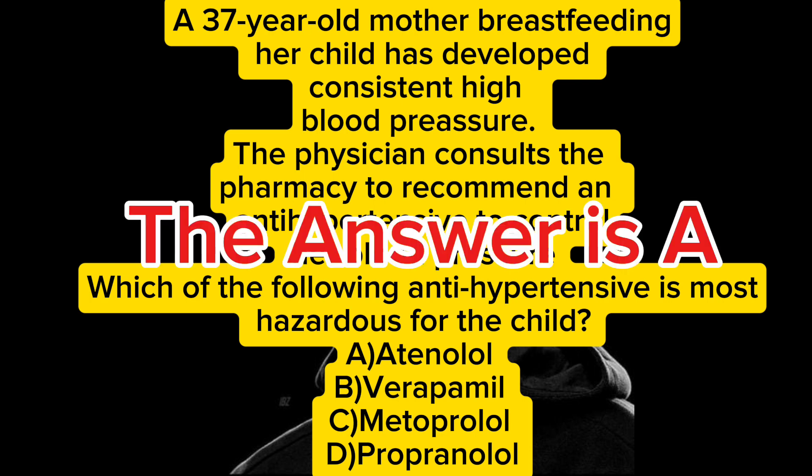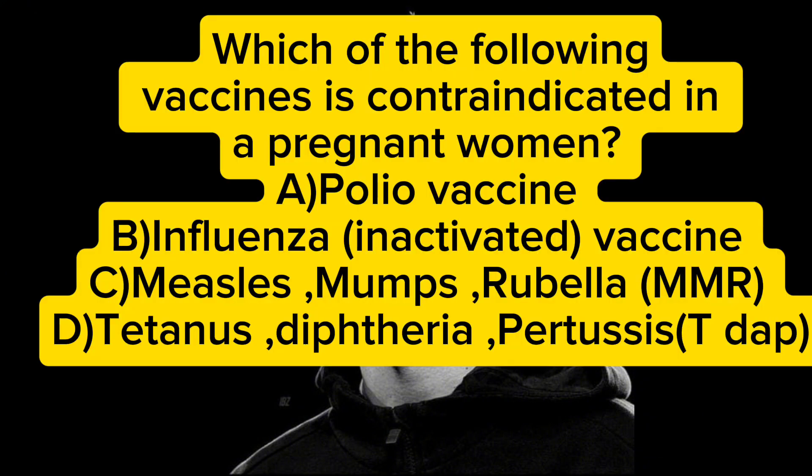Which of the following vaccines is contraindicated in a pregnant woman? A) polio vaccine, B) influenza inactivated vaccine, C) measles, mumps, rubella (MMR), D) tetanus, diphtheria, pertussis (Tdap). The answer is C — MMR.